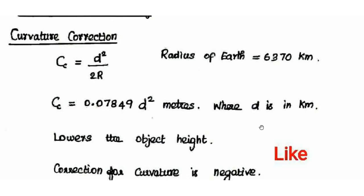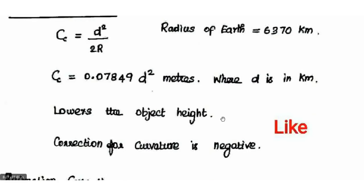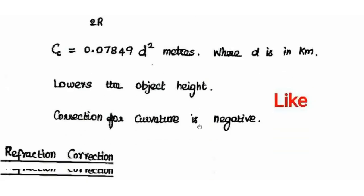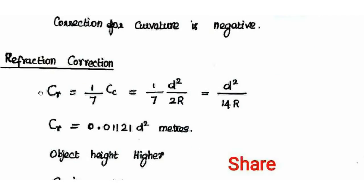For curvature correction, if we take a reading at level, the curvature correction is negative — the object's apparent height is reduced. So curvature correction is always negative (subtractive). Next is refraction correction, which is 1/7th of the curvature correction.